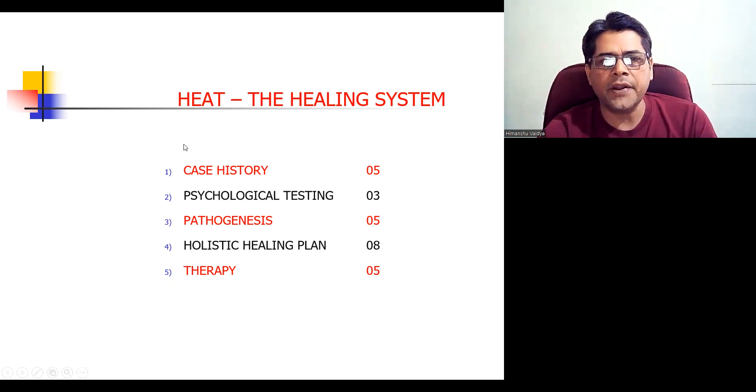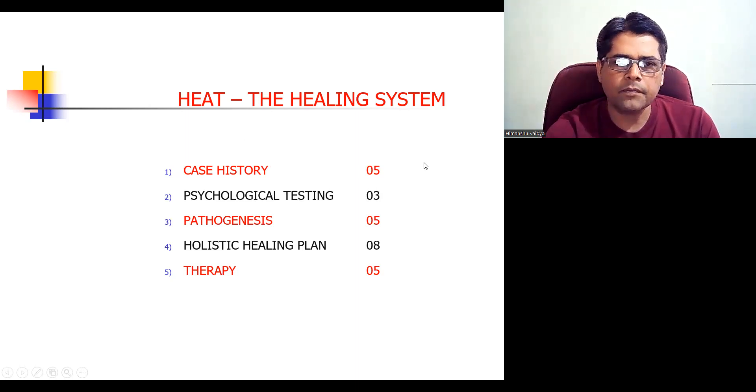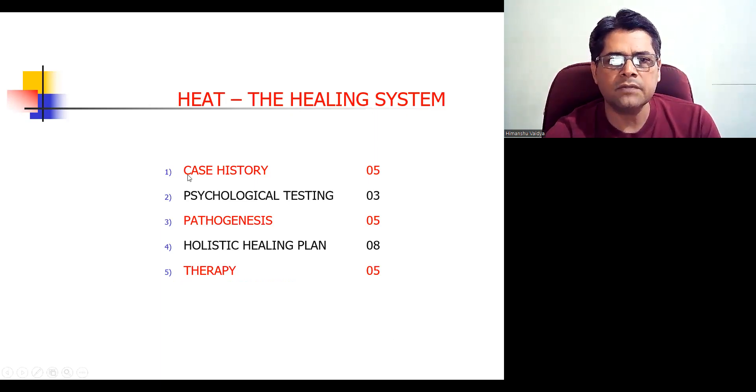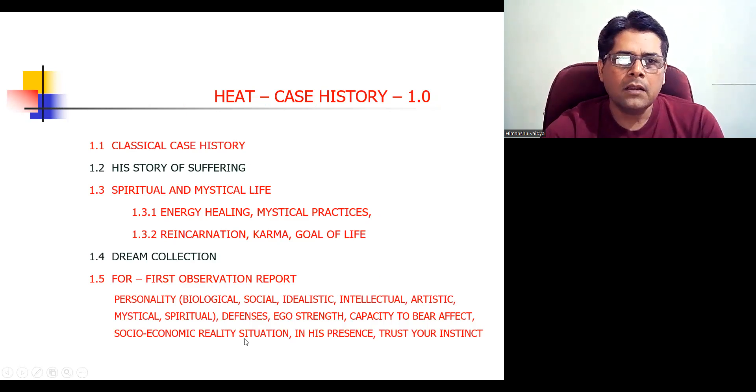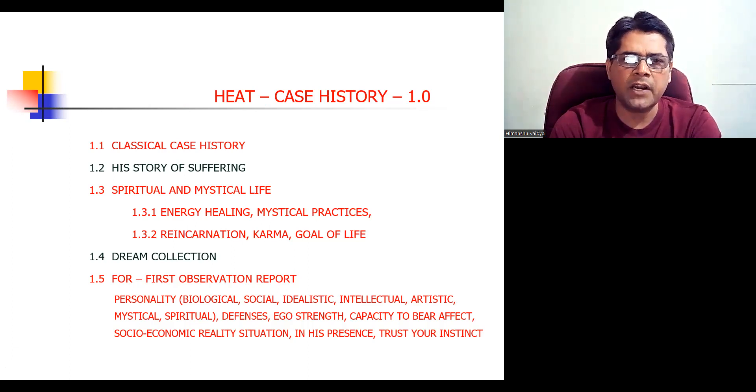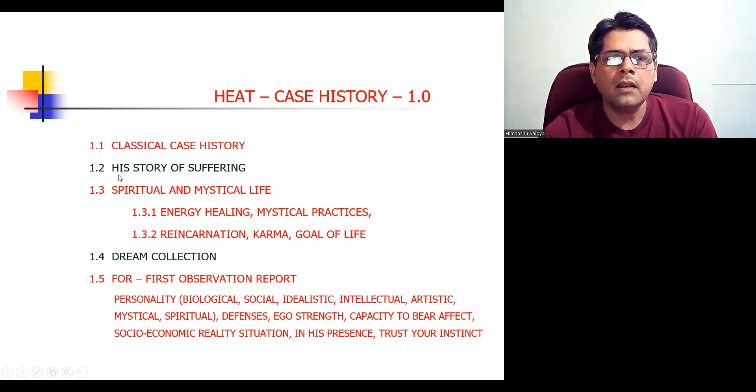If you see case history taking, that is divided into five parts. We take the information like in classical case history: personal particulars, complaints, history of present illness, onset development and progress, mental state and status examination. All of that we do. But additionally, what we do is this: we take the story of the patient of his suffering. How does he see his suffering? What is the story of his suffering?